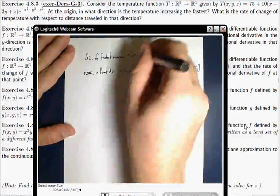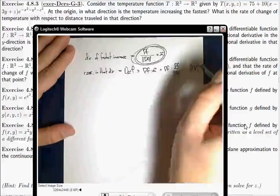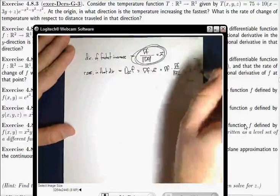which is the length of the gradient. So the direction of the gradient is the answer to the first part, and the length of the gradient is the answer to the second part.